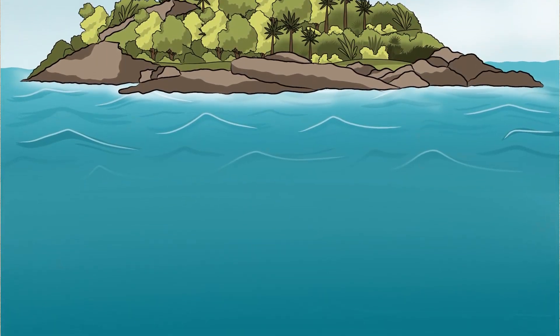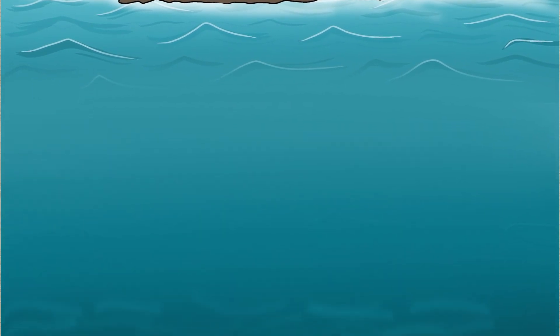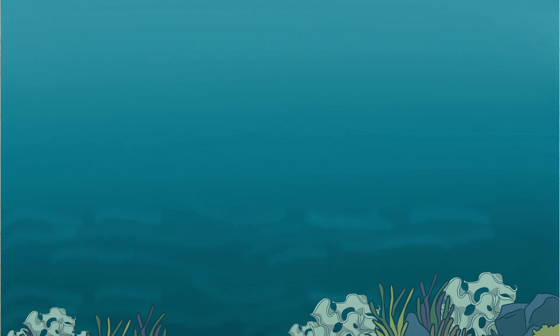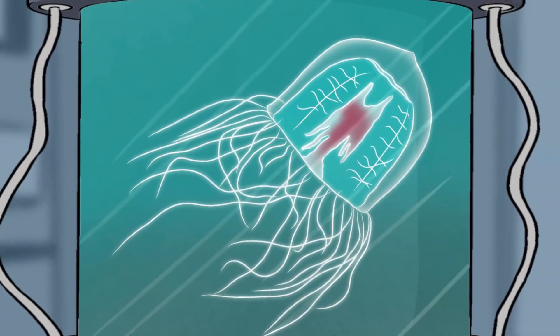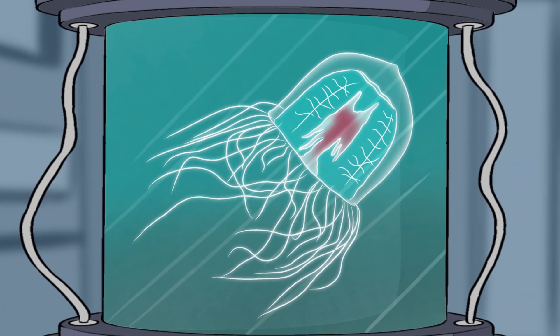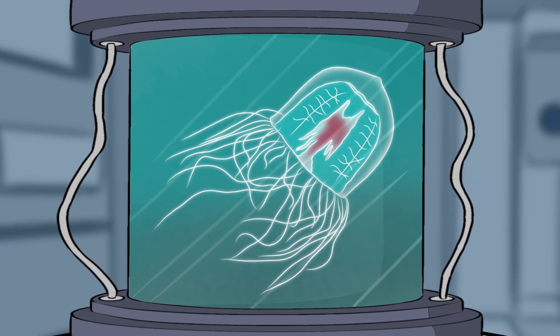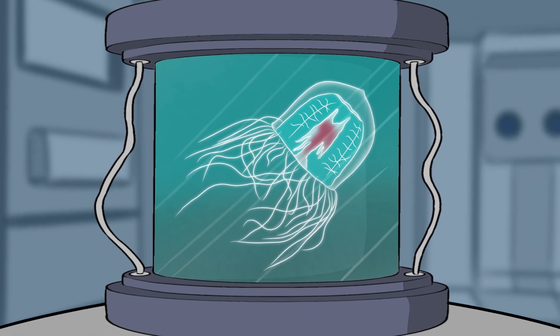For centuries, humans have searched for the fountain of youth. But what if the secret to slowing aging has been hiding in the ocean all along? Scientists are studying Turritopsis dornii to understand how it resets its biological clock, hoping to uncover clues about cell regeneration and longevity.